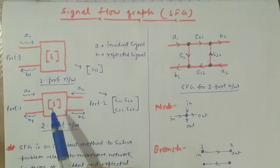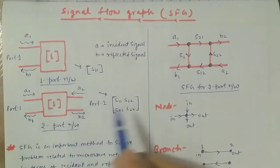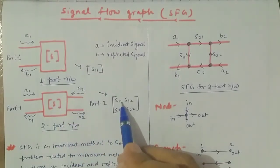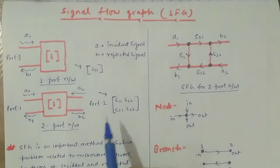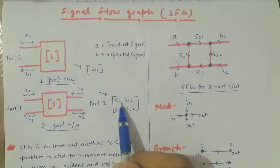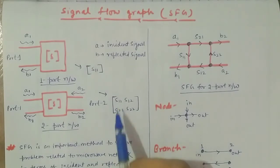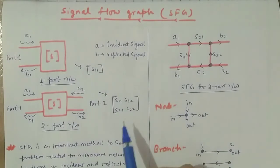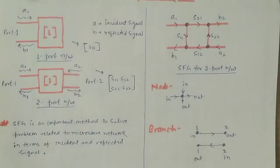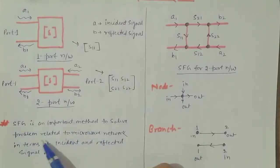For S12, the second subscript denotes the origin and the first subscript denotes the output. So S11 means the signal originates from port 1 and is reflected back from the same port. S12 means the signal comes from port 2 and reaches port 1. The SFG is an important method to solve problems related to a microwave network in terms of incident and reflected signals.